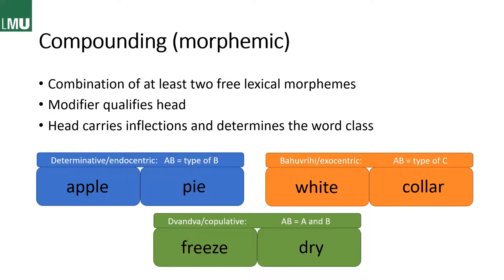And we have different types of compounds. There are two terminologies listed — personally, I learned the second terminology by heart because the first contains some really hard words to remember. We have determinative or endocentric compounds, where the compound AB is a type of B. Our example is 'apple pie,' where an apple pie is a certain type of pie — namely a pie with apples — so the 'apple' just gives more information about the pie.